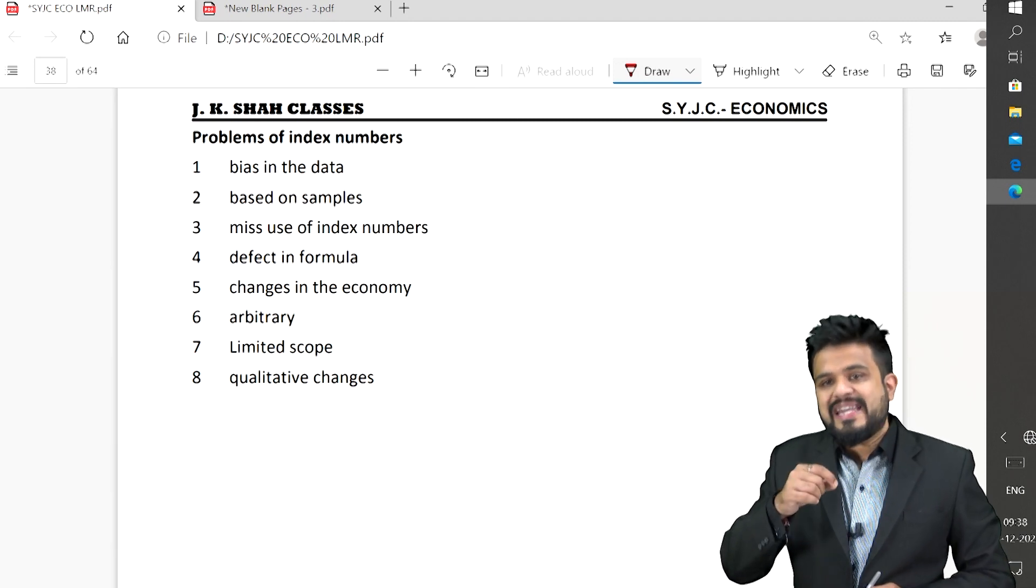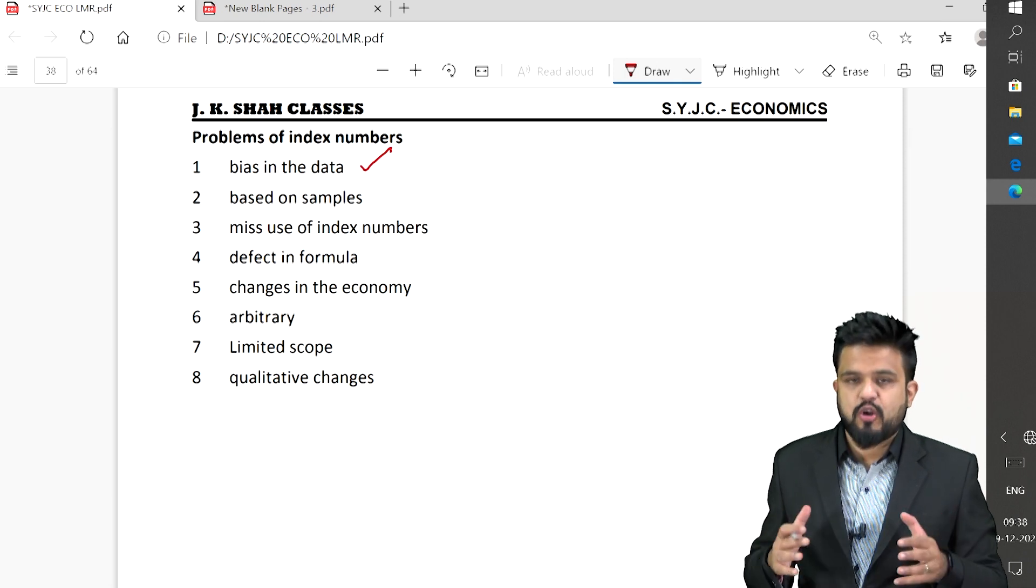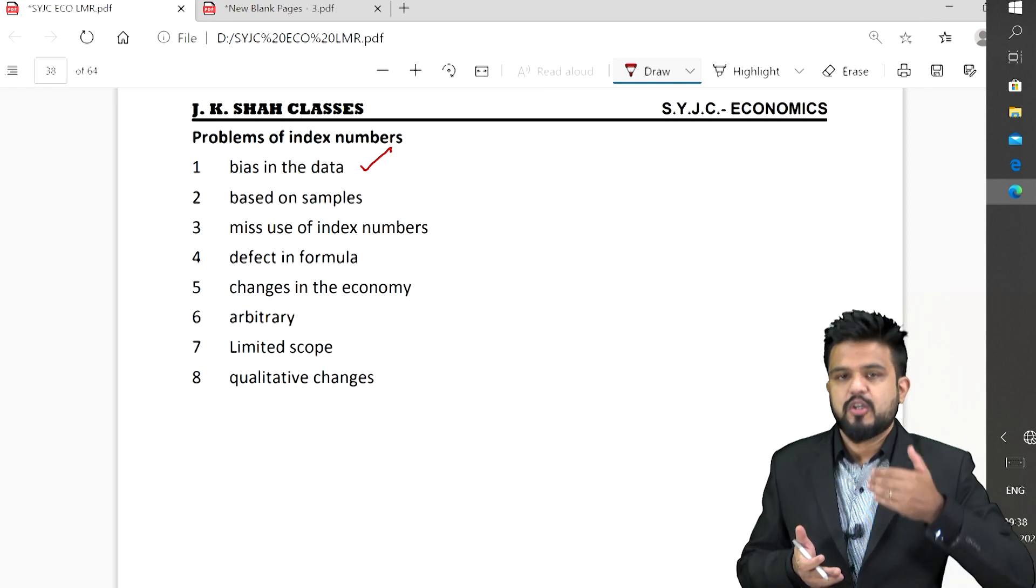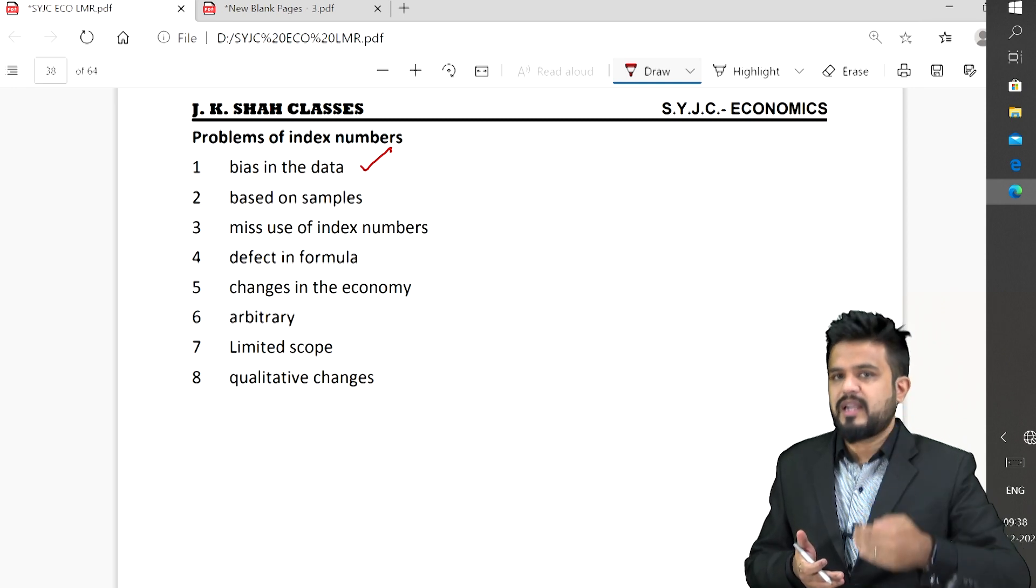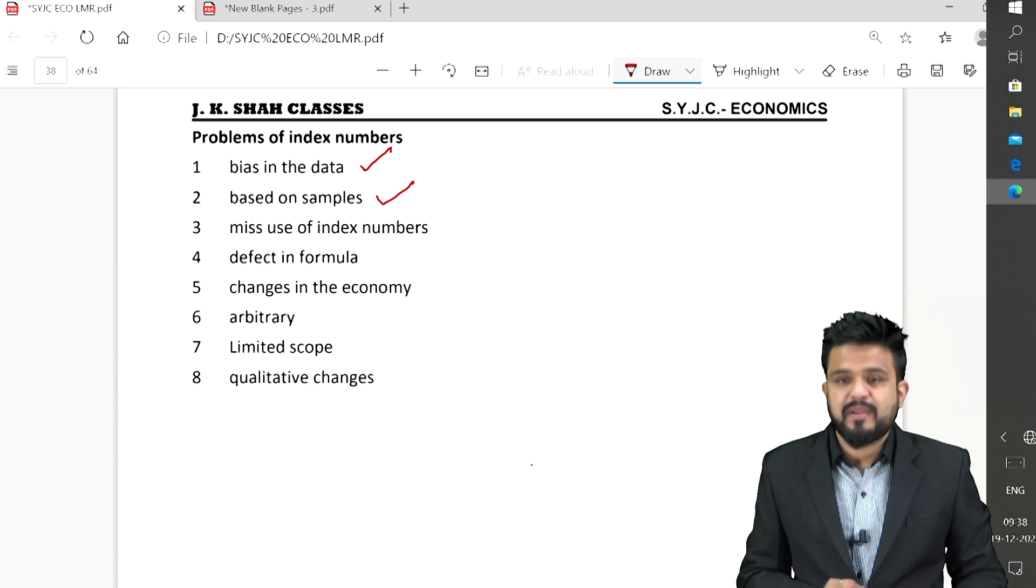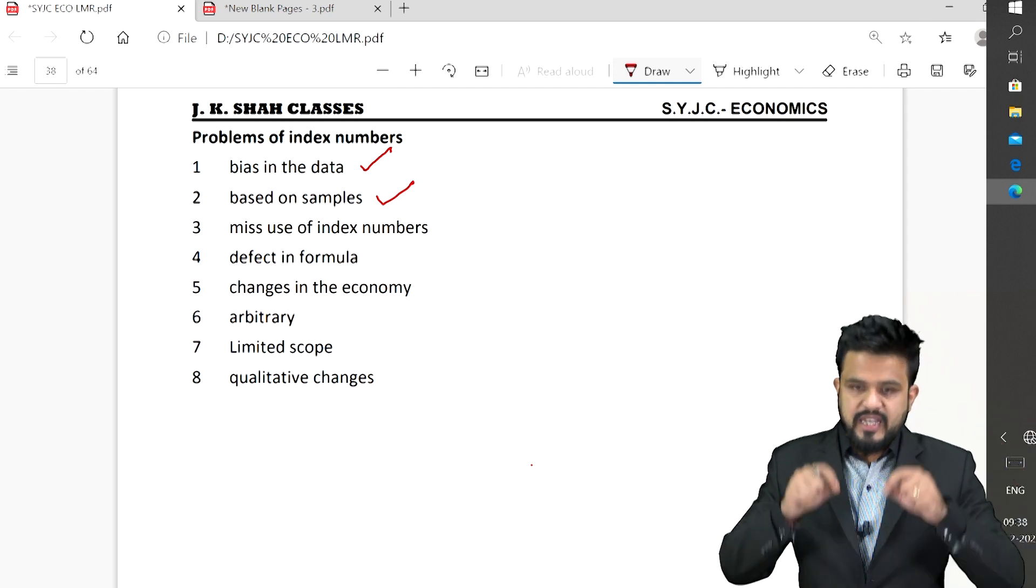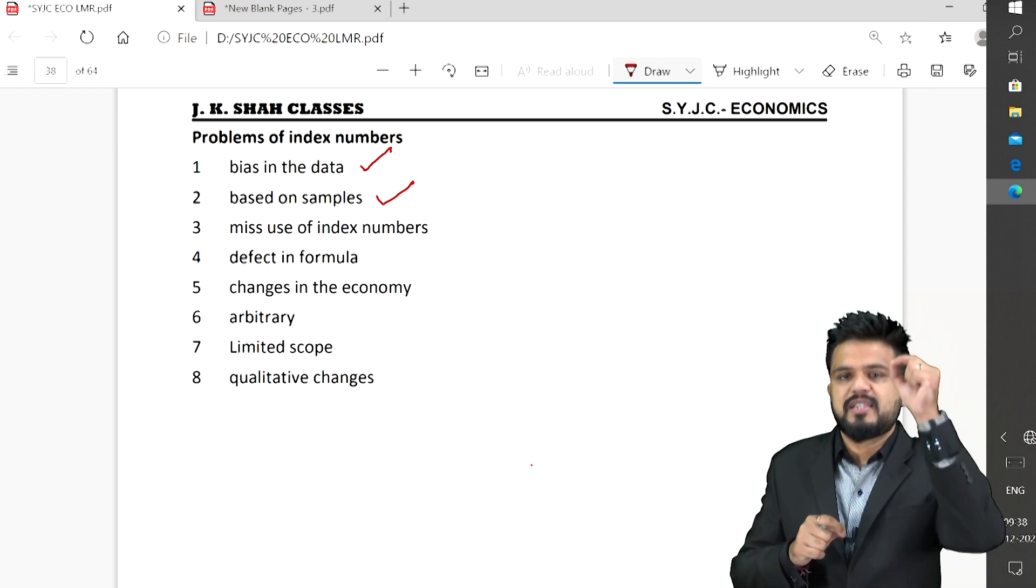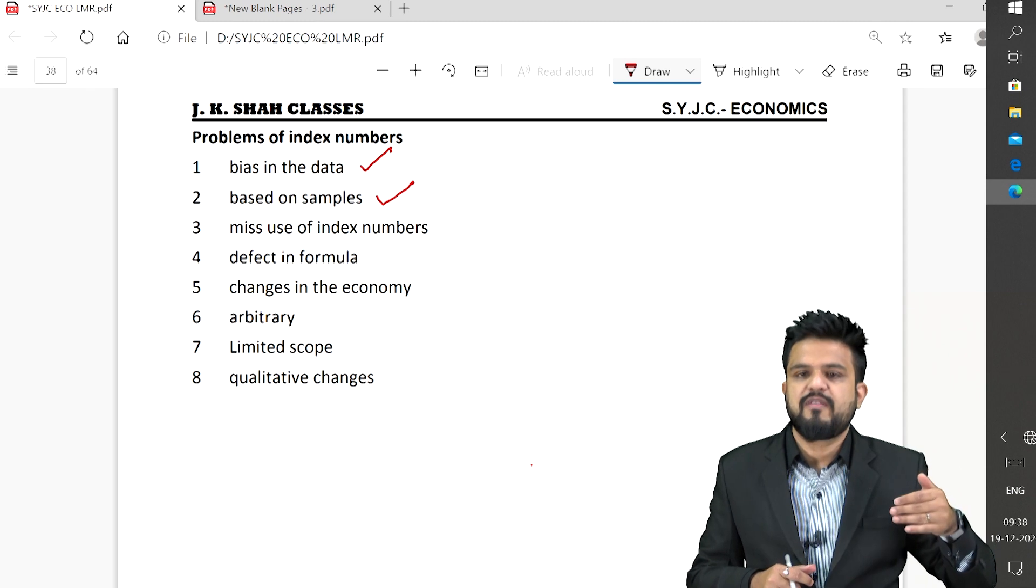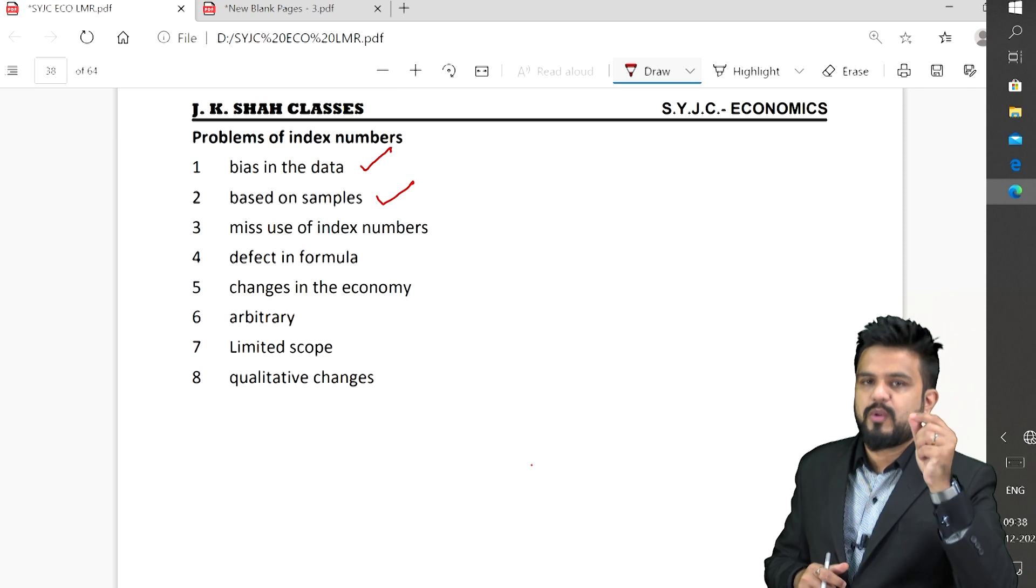Coming to problems of index numbers, what are the problems associated with index numbers? There could be partiality or bias in the data, data may not be proper, accurate or could be incomplete. The ultimate solution for index number may not be true. Based on samples, every variable is not considered, each and every unit is not considered, sampling is being done. If there are 100 units, roughly 40-50 variables or units are taken into consideration. Sampling may not give you accurate answer.